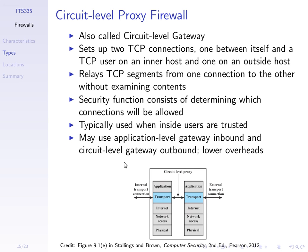There are overheads involved with using application-level firewalls, so often they're only used for specific purposes. One approach is to use application-level gateways for incoming traffic — people connecting into your servers — and a circuit-level TCP proxy to control internal users connecting out, so that not everything needs to be inspected at the application level. Proxy servers come up in a number of different scenarios, acting on behalf of the original communicating entities.